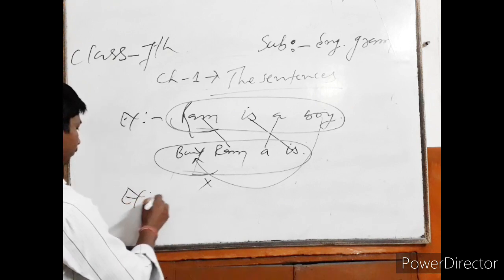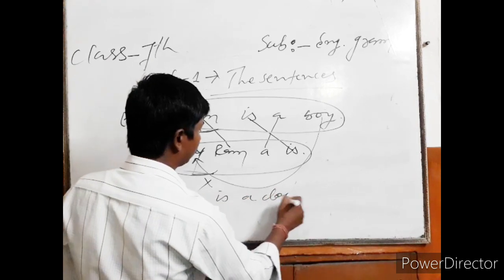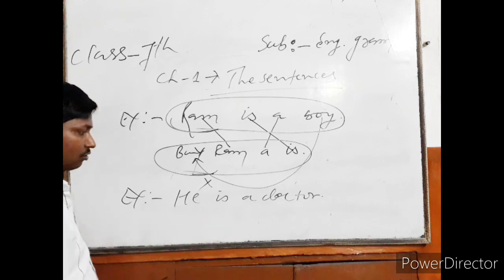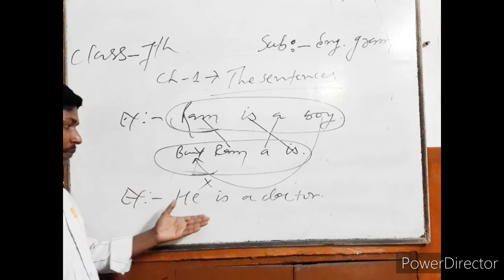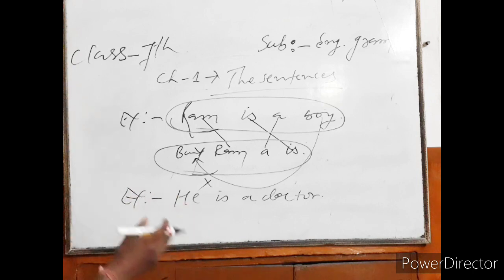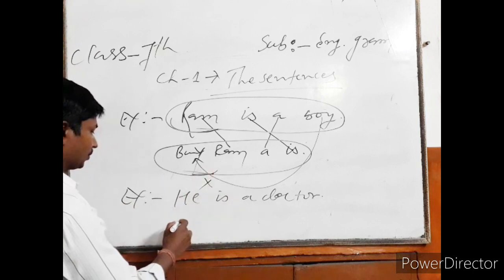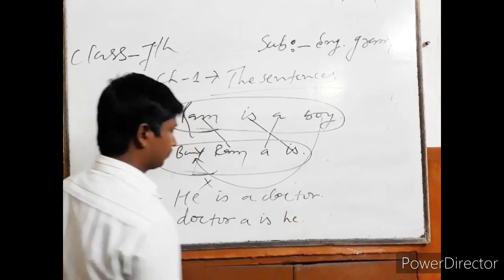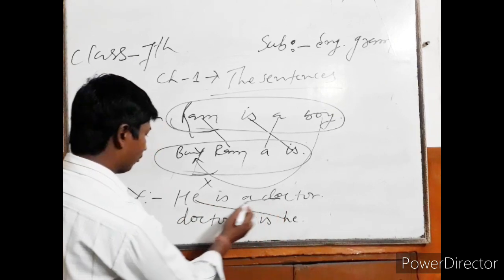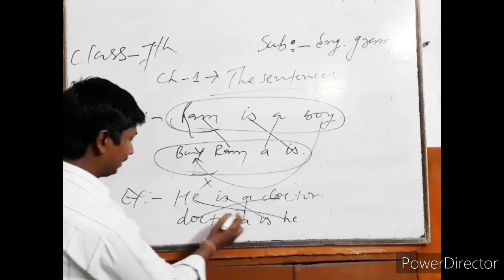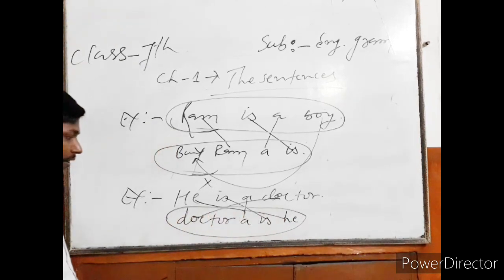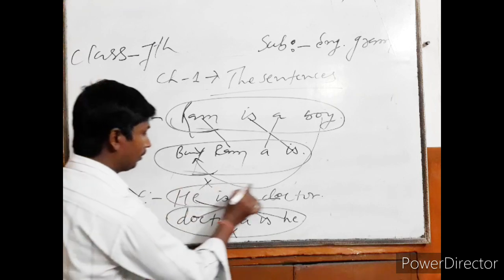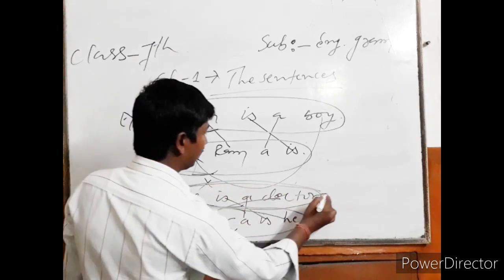Another example: 'He is a doctor.' The sentence is arranged in a very good manner and it gives the sense that he is a doctor — we can understand the meaning. But if we jumble this sentence like 'Doctor a is he,' here you can see the same words, but this sentence is not giving a complete meaning, so we can say that this is not a sentence. The correctly arranged version gives a complete sense, so it is a sentence.